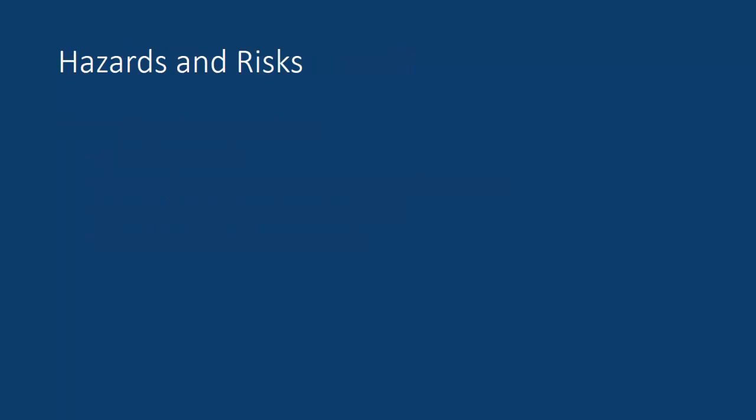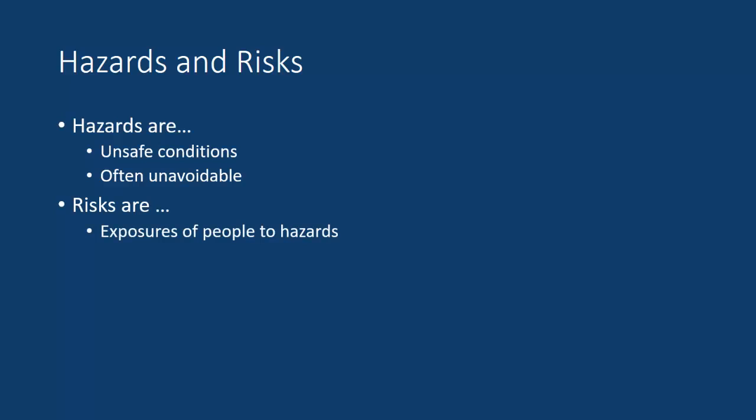I used a couple of terms: hazards and risks. Hazards are specifically unsafe conditions associated with your design. They are often unavoidable things. If you're going to cut something, then you probably have something that's capable of cutting a person as well — that's what the hazard is. Risk is the specific exposure of people to the hazards. A hazard may have to exist in your design, but the risk is the likelihood or the possibility that a person is going to interact with that hazard and actually be exposed to it. Risks are by definition adjustable by the design or the process that you implement — that's where risk assessment comes into play.